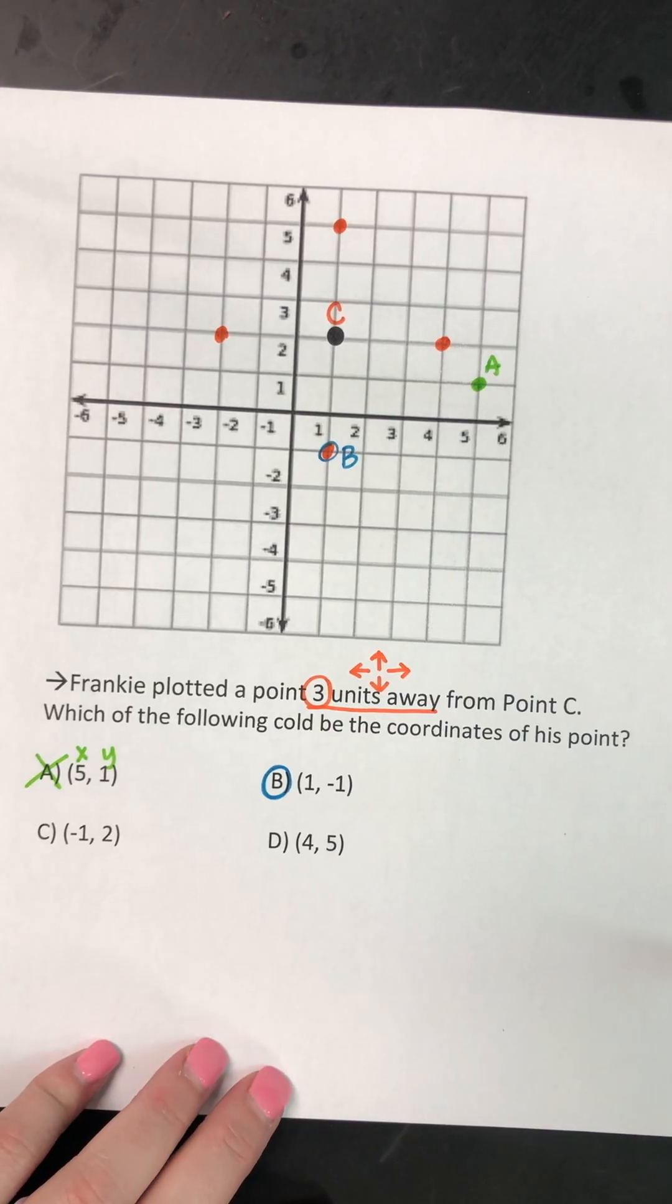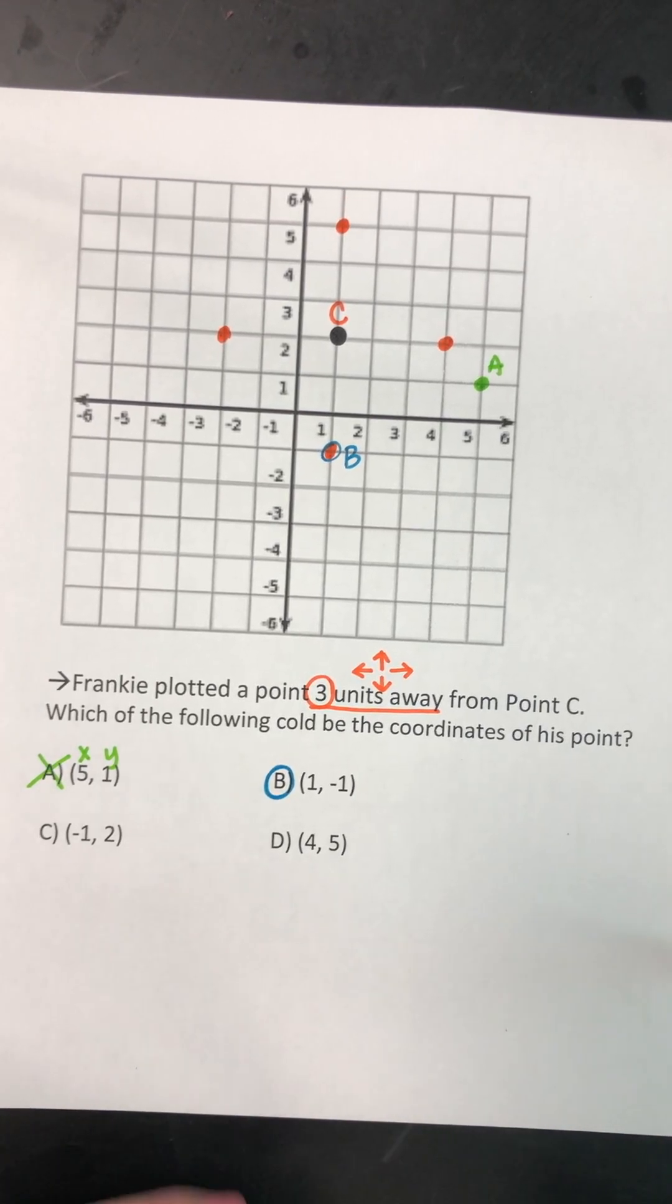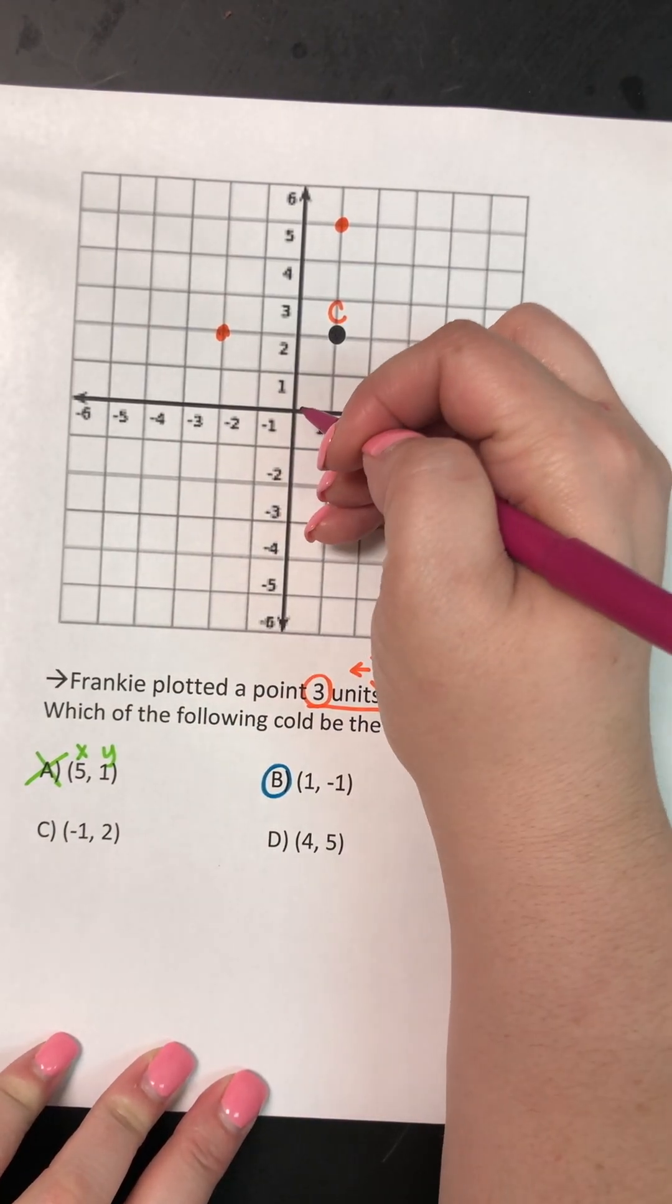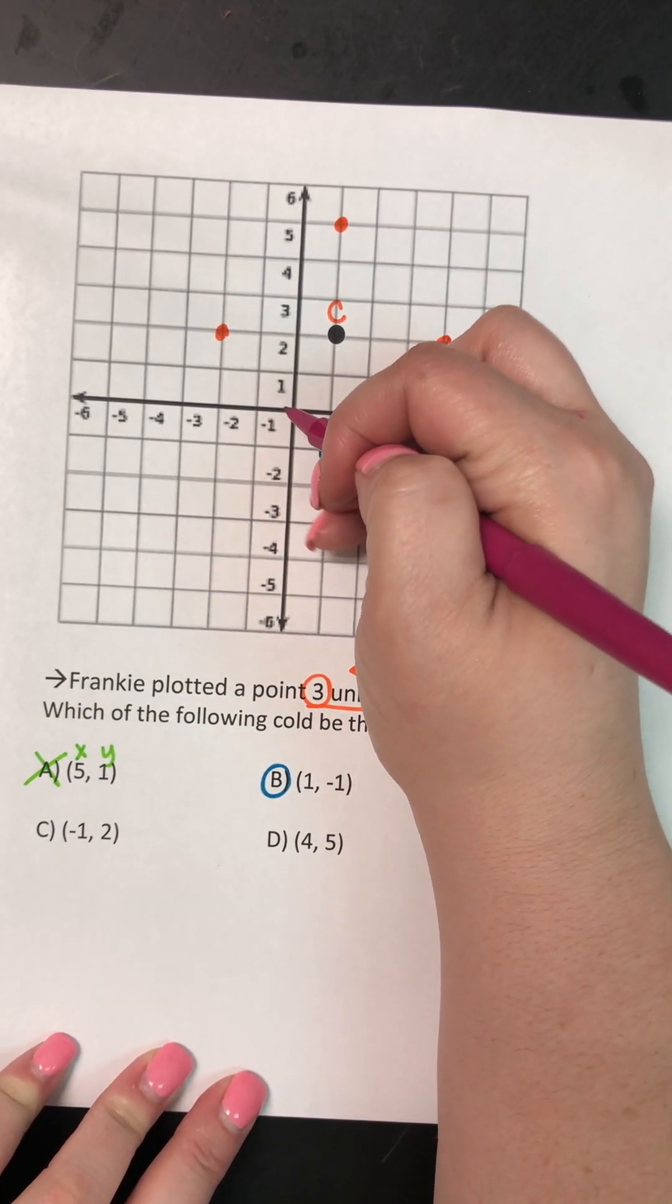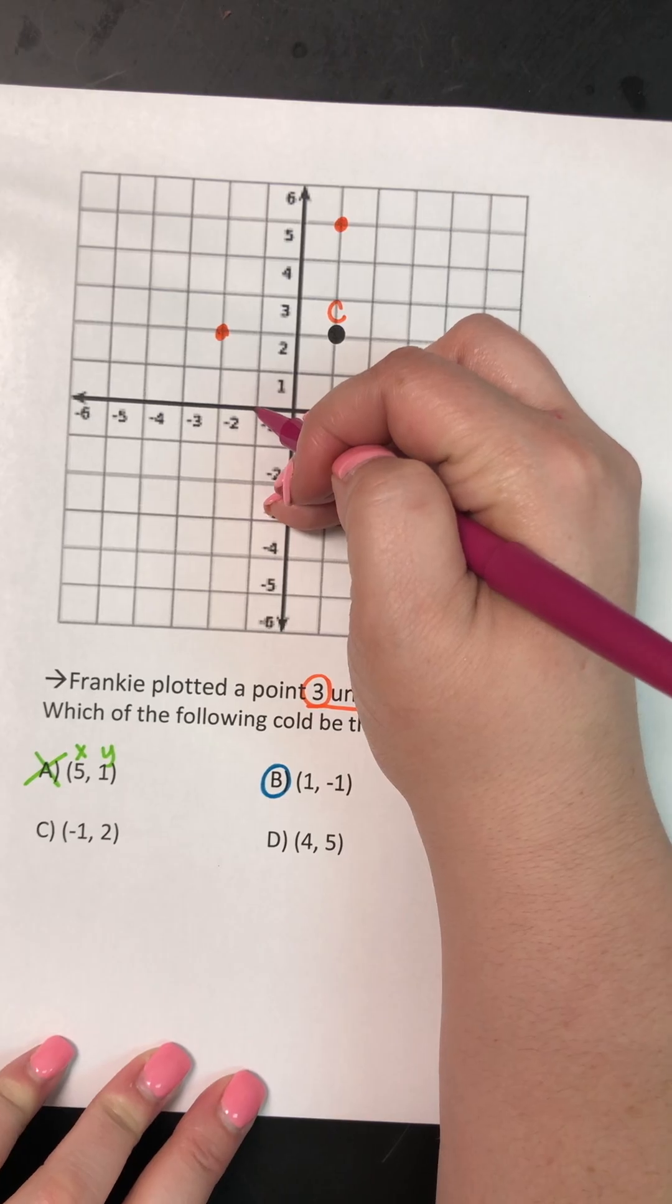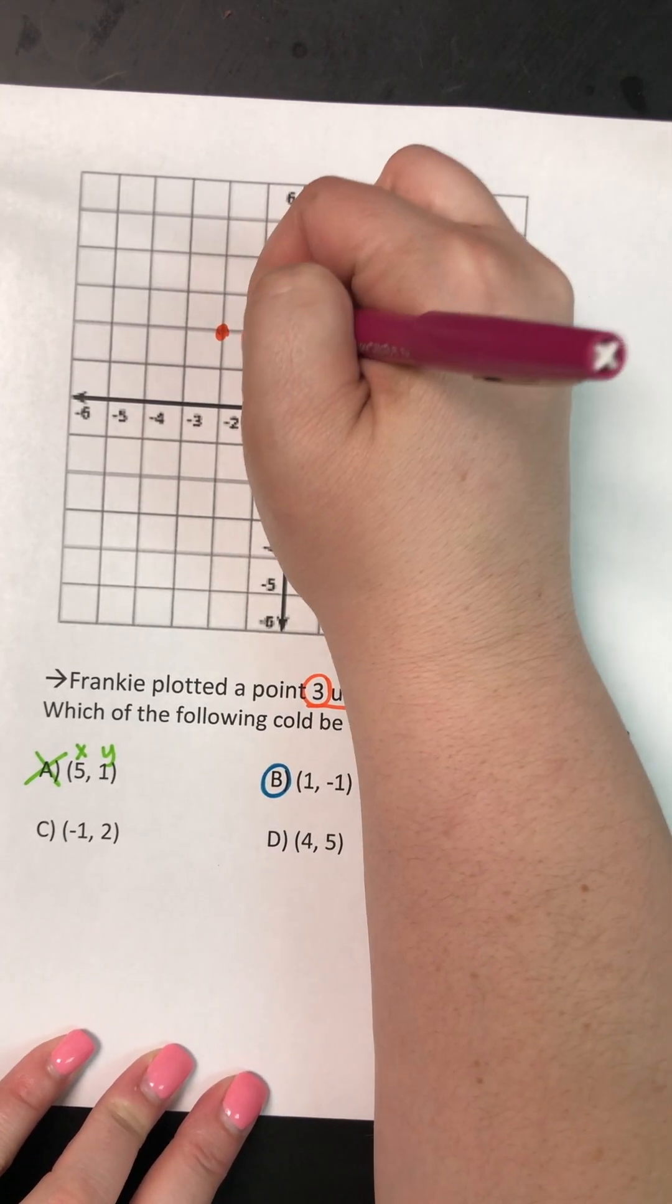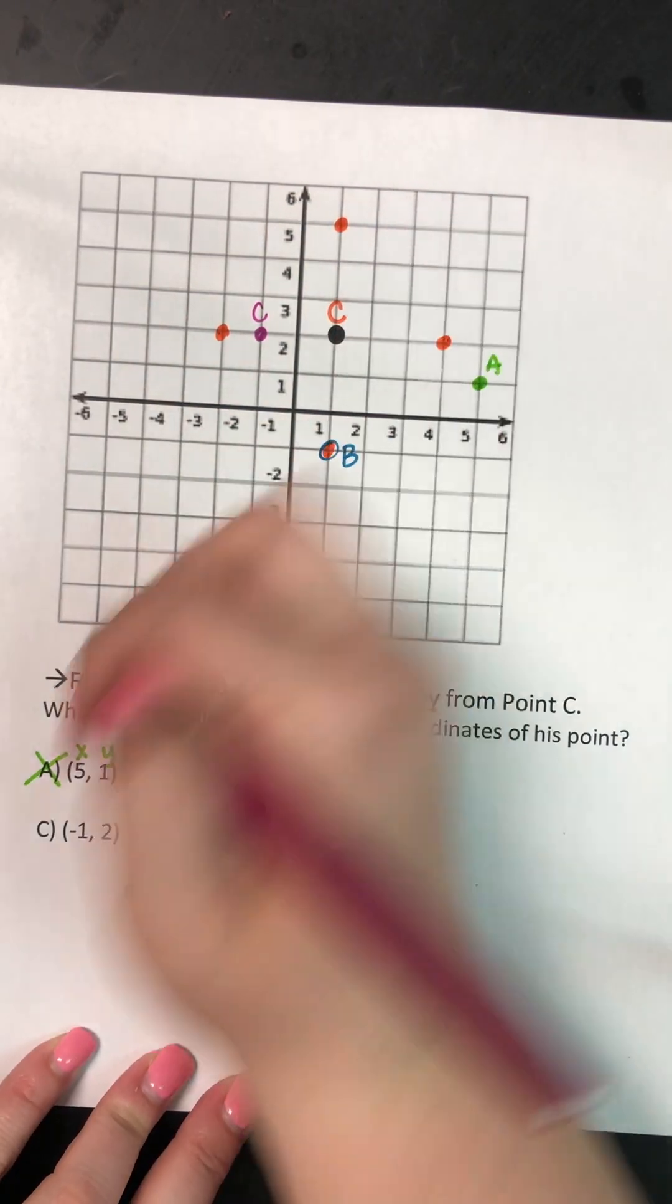I'm gonna keep going just to show you that C and D are wrong. So point C is negative one, positive two. I start at the center, and I walk negative one. And then I take the elevator to positive two. So this one is close, but it is not correct.